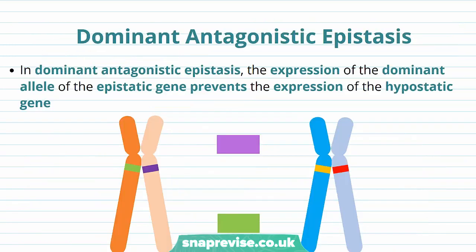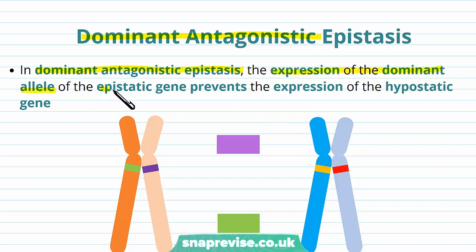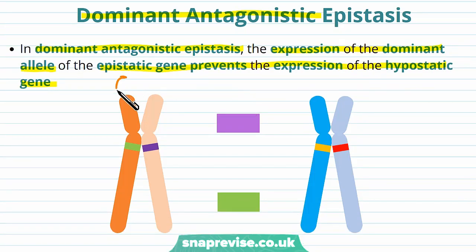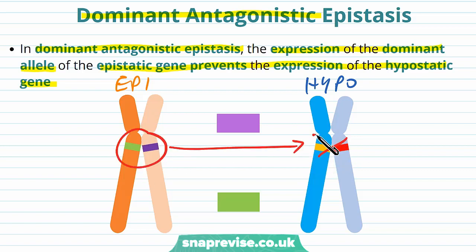As well as recessive antagonistic epistasis, we can also have dominant antagonistic epistasis, which works in a similar fashion but involves dominant alleles instead of recessive ones. In dominant antagonistic epistasis, we still have two genes antagonising each other, but this time the expression of the dominant allele in the epistatic gene prevents the expression of the hypostatic gene. In order for the blockage to happen, the epistatic gene must have a dominant version — for example, a large A over a little a.